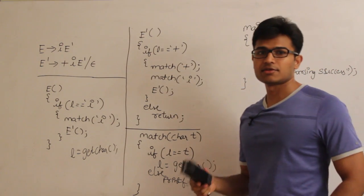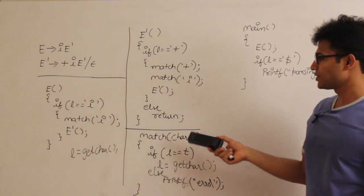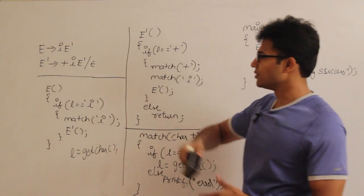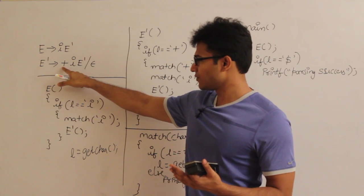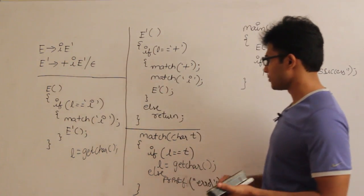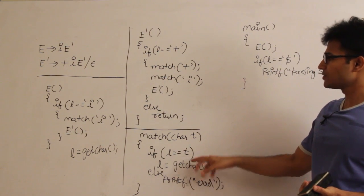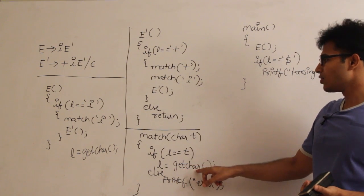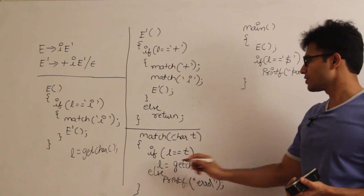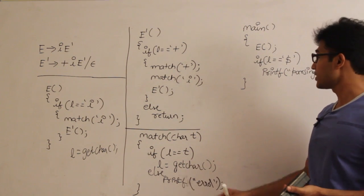Writing these functions is called recursive descent parsing. There is also a function called match. Match does just this: if the input is equal to the required symbol, it is going to match. Whenever the input matches what I wanted, I increment the lookahead using the function getchar. Otherwise it prints error.